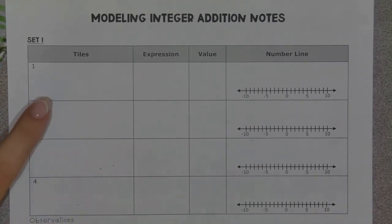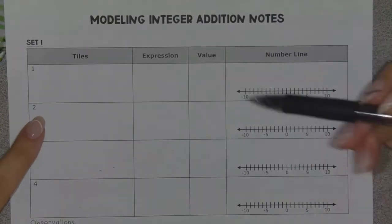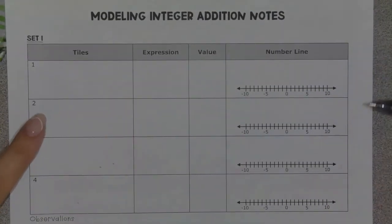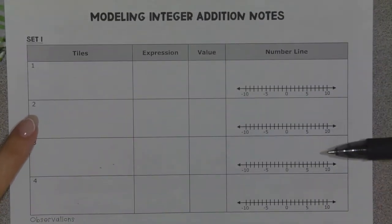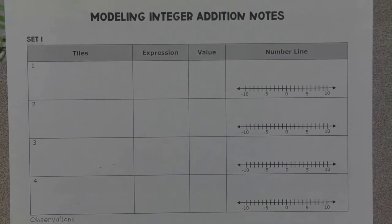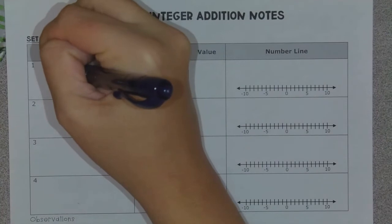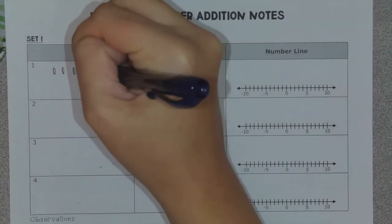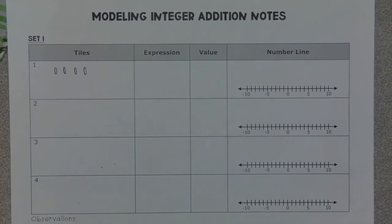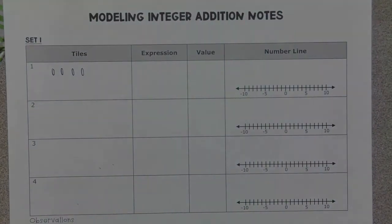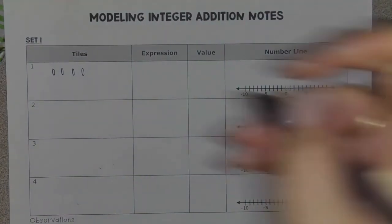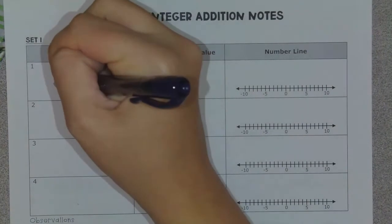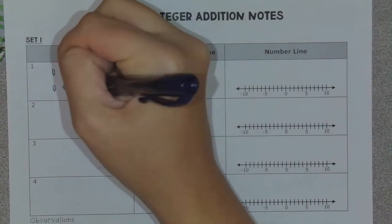So our very first one, we're going to draw our tiles. I'm just going to come up with some problems for us. Let's say that our first tile is going to be four positives on top. I'm going to draw circles today because circles are easiest, and I'm going to leave them unshaded to show that they are positive. So there are four positives, and then we're going to do six positives.